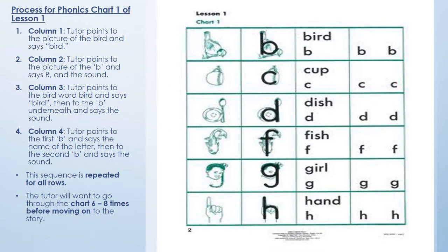Here is an example of the first phonics chart from the first book. As you can see, there are no vowels on this chart — vowels come a little bit later because they're really tricky, especially for literacy learners. We haven't built up enough auditory discrimination at this point to distinguish between vowel sounds, which sound very much alike — it's the inflection that makes them different. We focus here on the first six consonants, with instructions on the left side for how to go through the chart.